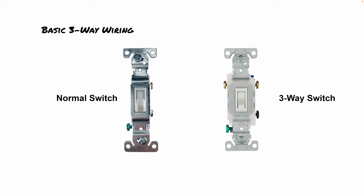Let's look at the wiring for a normal switch. Basically what you do is you install the hot wire, or the black wire, on a normal switch and install that to both terminals. And basically when you flip the switch, it's going to interrupt the circuit to turn the light fixture or fixtures on and off.